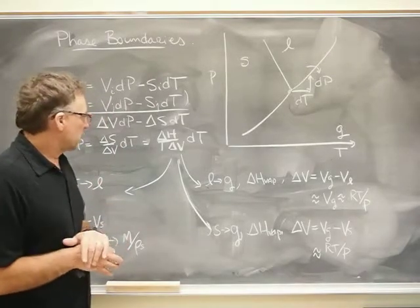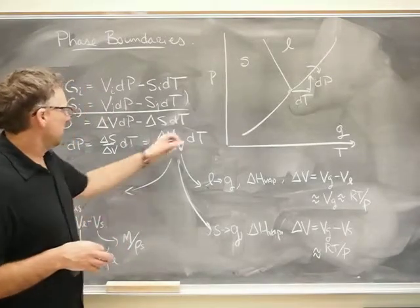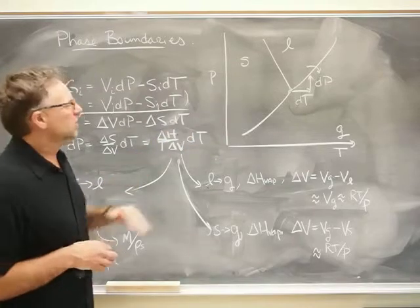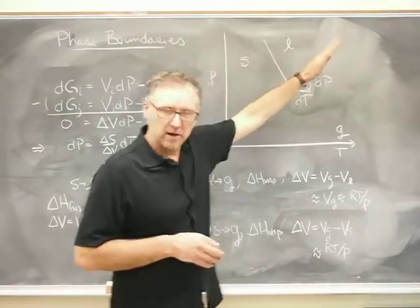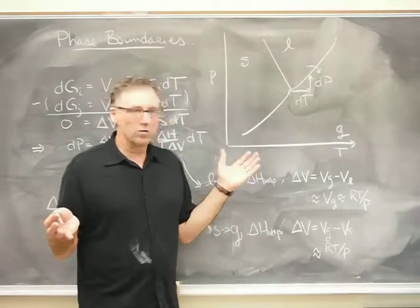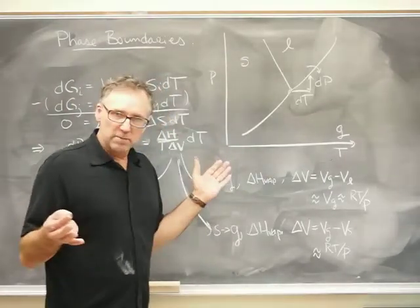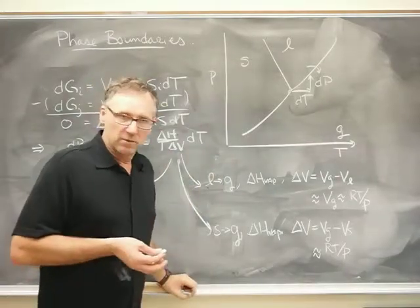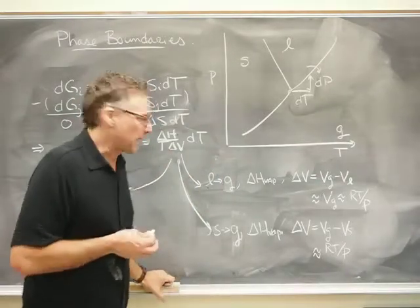So one approximation that we're going to make is that the enthalpy, delta H, which doesn't change very much, the enthalpy of the transition. We know that that's about 44 kilojoules per mole for water at room temperature and 41 at boiling. So that's maybe not such a bad approximation.